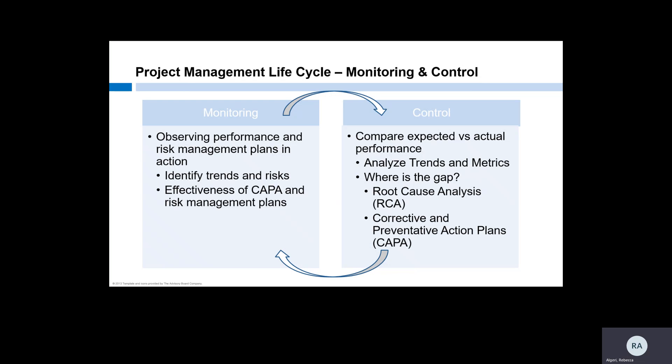The goal of control is to get a handle on our risks to quality, project performance, data integrity, and subject welfare. We look at the data we collected during monitoring and compare what actually happened against what we expected to happen. Are we performing better or worse than we expected? The difference is called a performance gap. Conduct a root cause analysis to identify what really caused the discrepancy. Once we've identified our root cause, we'll develop a plan to fix it and prevent it from happening again — a corrective and preventative action plan, or CAPA. Root cause analysis and CAPA are team sports. All of the study team members involved need to participate in the process to identify the core issue and develop the CAPA.